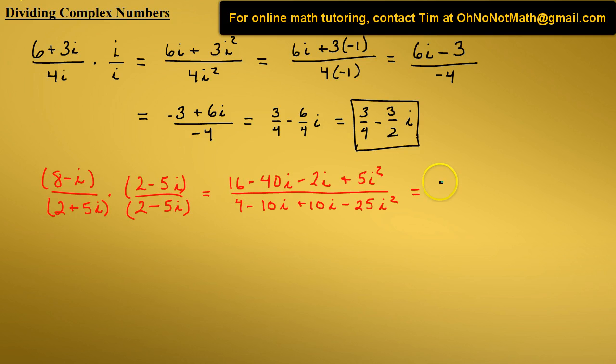Let's take the numerator: 16. We have negative 40i minus 2i, which is negative 42i. And we have plus 5. Let's plug in this negative 1 for i squared.